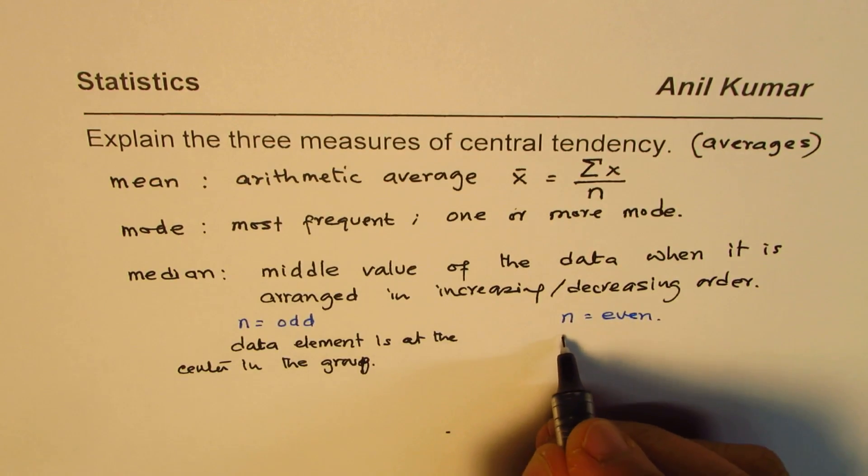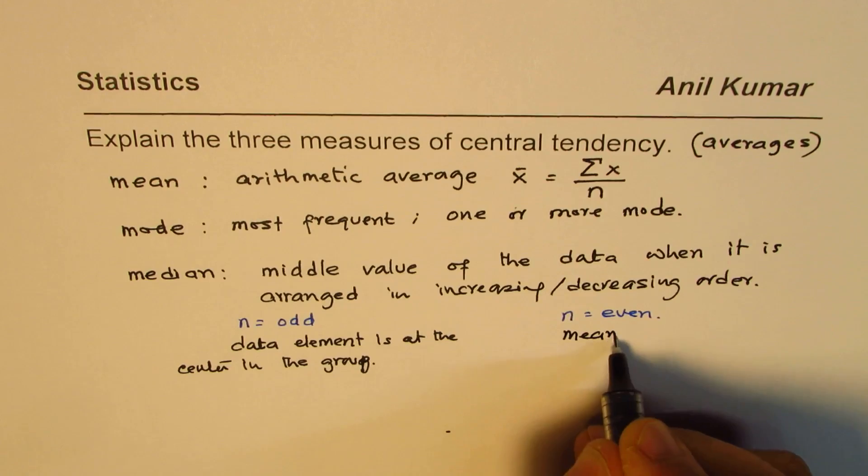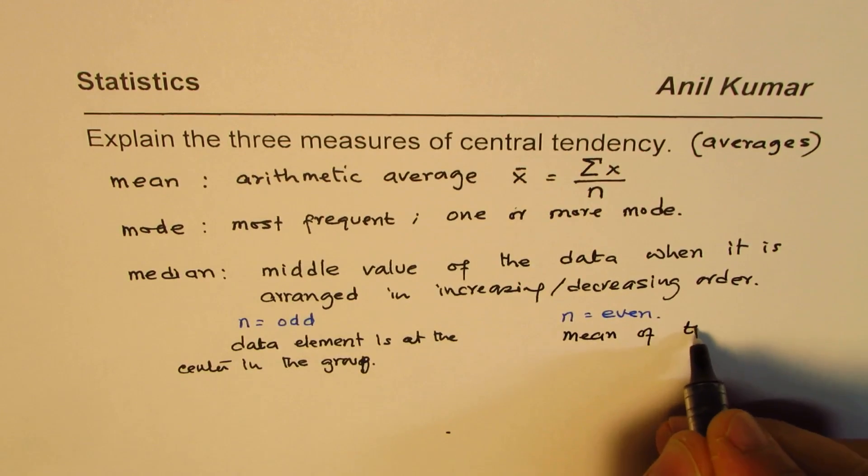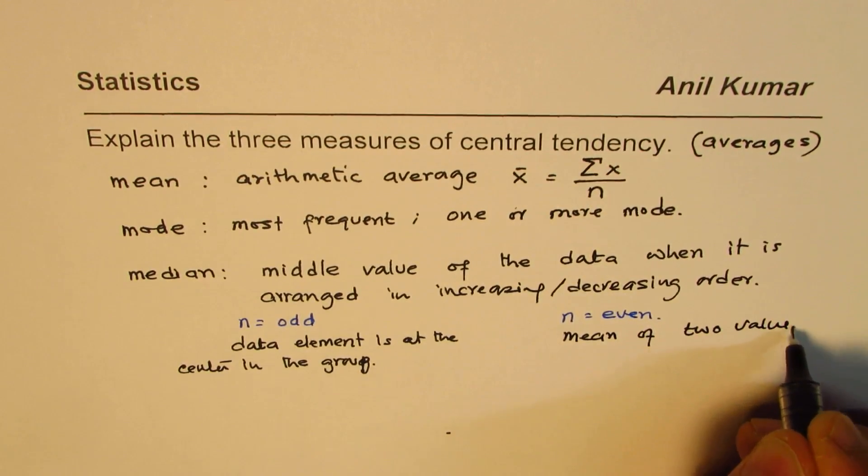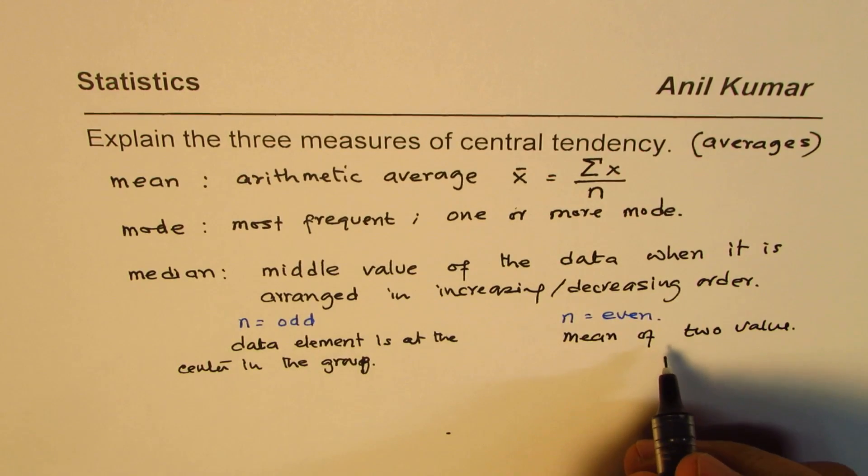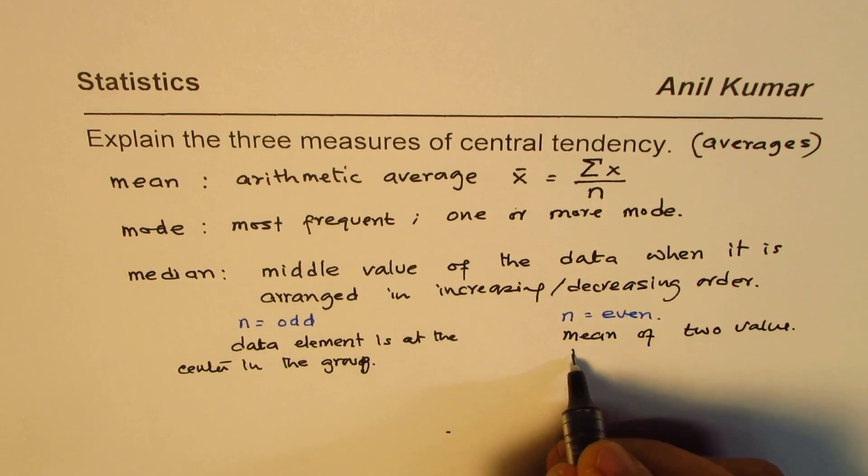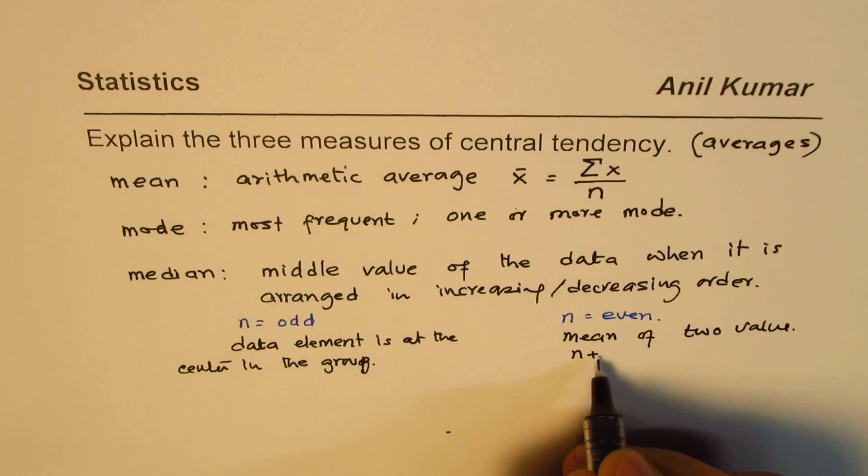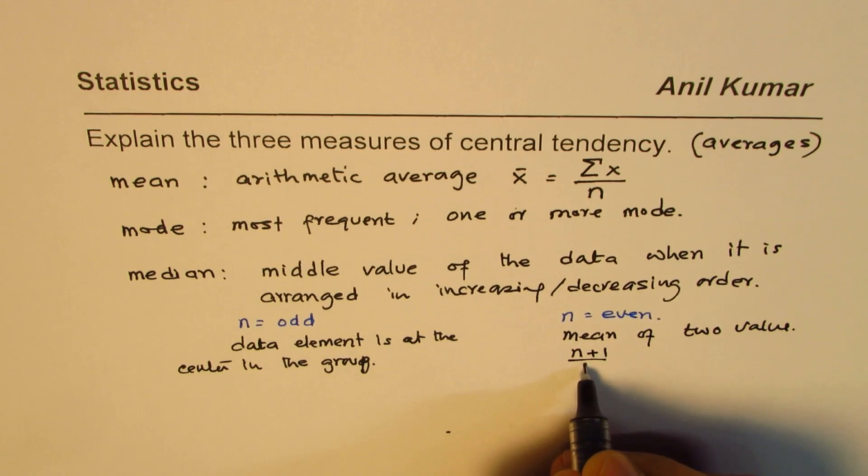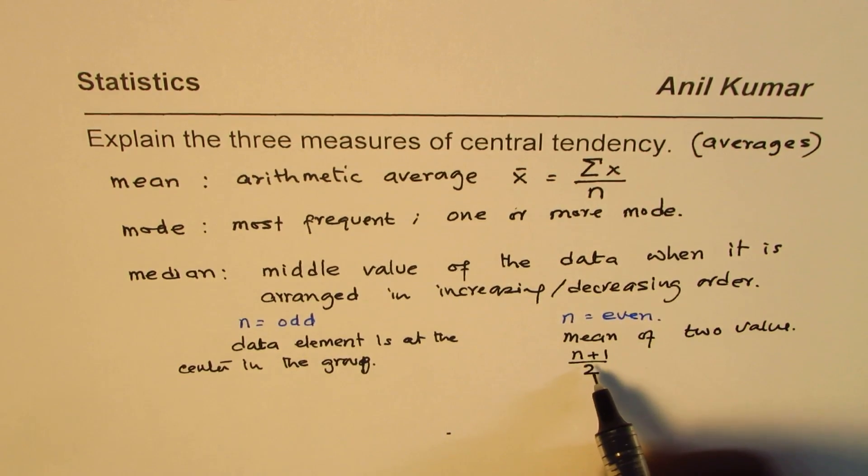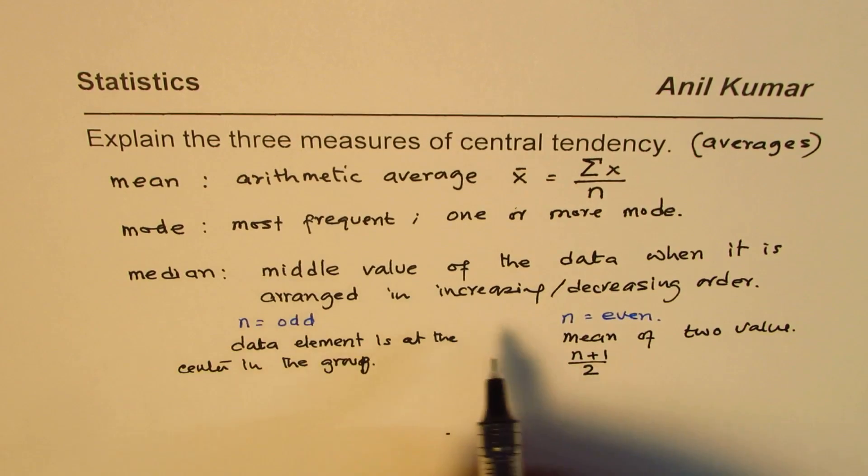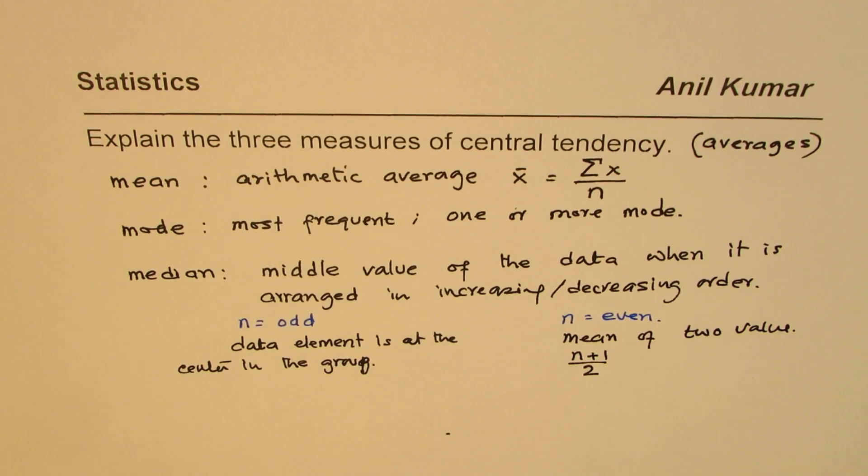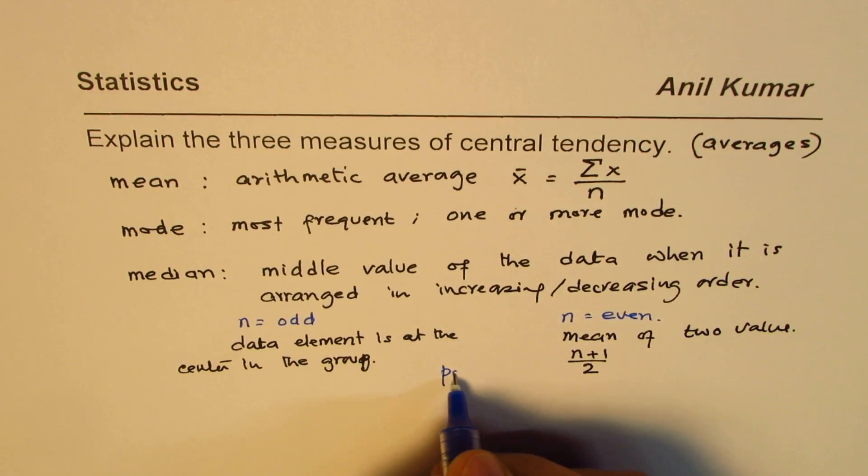we may have to find the mean of two values. In that case, those two values are around the position n+1 divided by 2. I mean in the sequence, the position. So median is basically the central position.